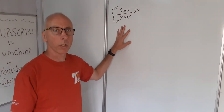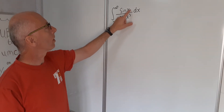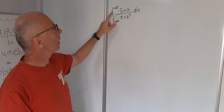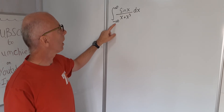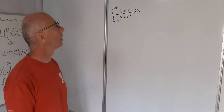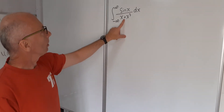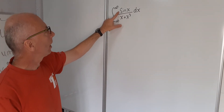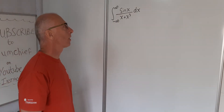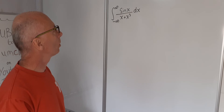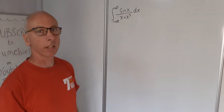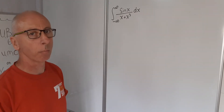In this video we're going to integrate sine of x over x plus x cubed — a definite integral over the whole domain from negative infinity to infinity with respect to x. We've got a polynomial in the denominator and a trig function in the numerator, so integrating this in real numbers is going to be tricky. Let's take a go with complex analysis.